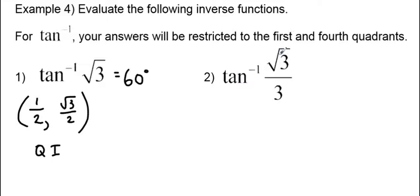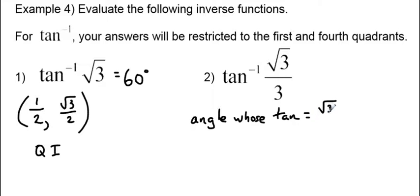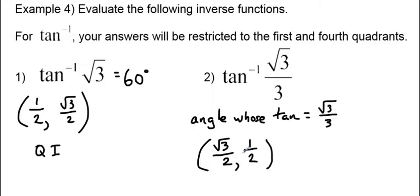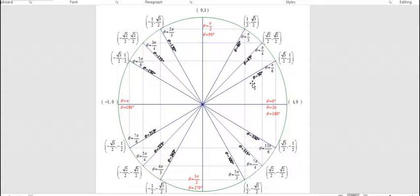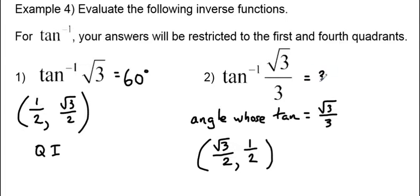The second problem says the inverse tangent of radical 3 over 3. We are looking for an angle whose tangent equals radical 3 over 3. We get radical 3 over 3 when the y coordinate is radical 3 over 2 and the x coordinate is 1 half — both positive. Checking the unit circle, at 30 degrees or pi over 6 we have those coordinates. So our answer is 30 degrees or pi over 6.